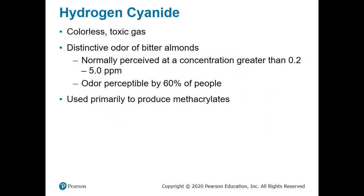Another common inhalation toxicant is hydrogen cyanide. Hydrogen cyanide, HCN, is a colorless toxic gas. This one is detectable — we can smell it. It has the smell of bitter almonds, and we can detect it at concentrations anywhere between 0.2 and 5 parts per million or higher.